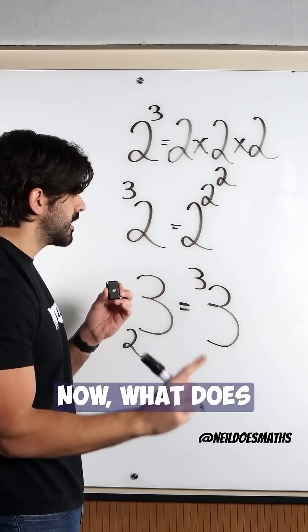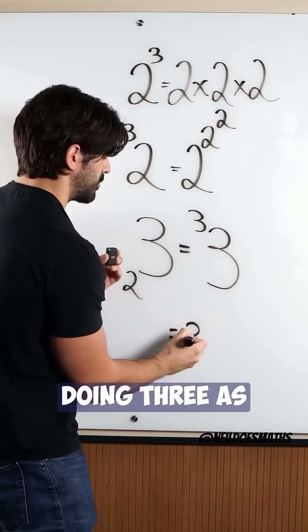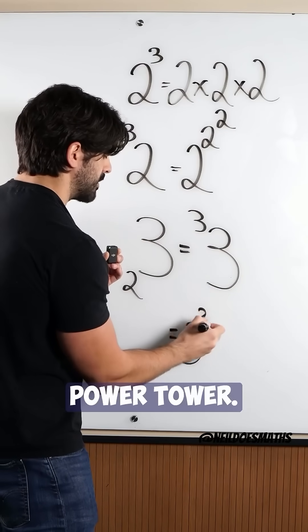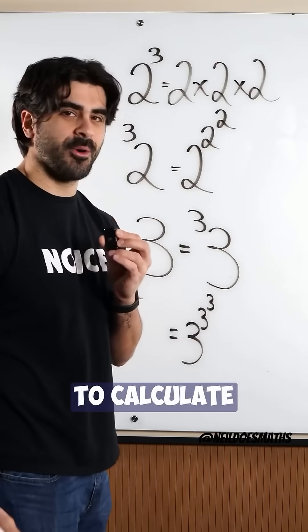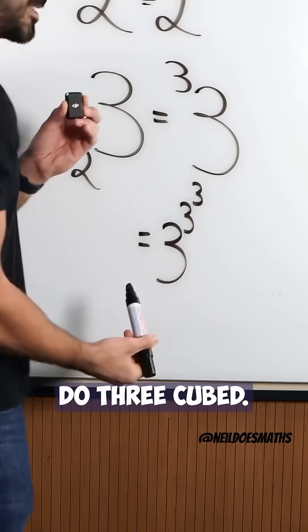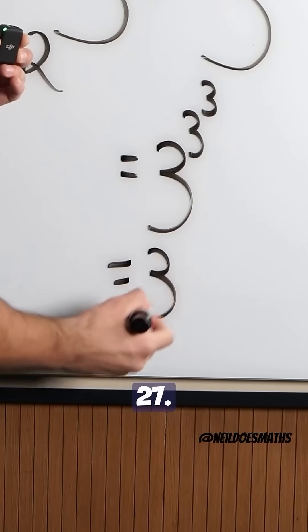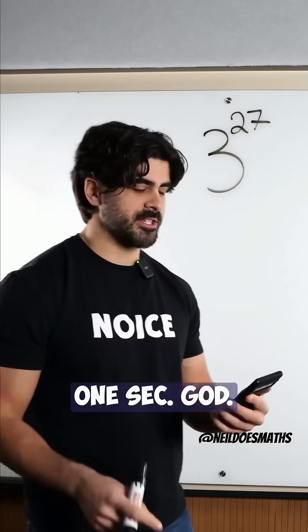Now, what does the third tetration of three mean? It means you're doing three as part of a power tower three times. Now we need to calculate what this is. Before we do three cubed, we need to do three cubed. Three cubed is 27. What is three to the power of 27? One sec.